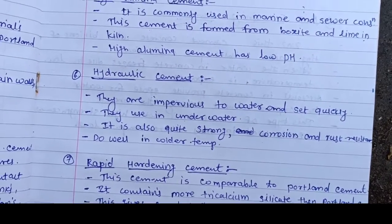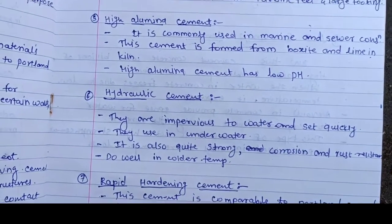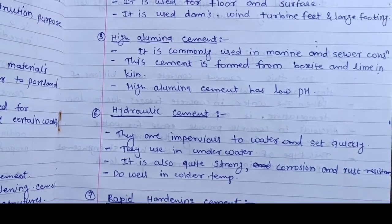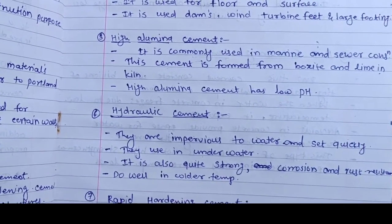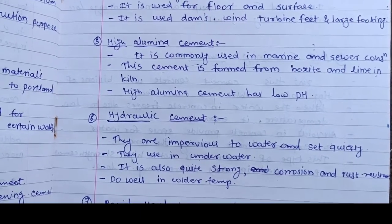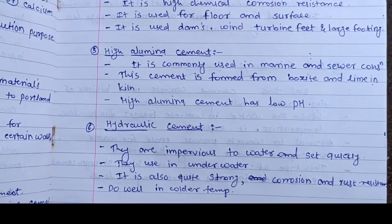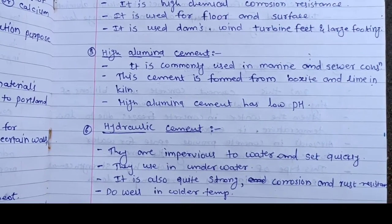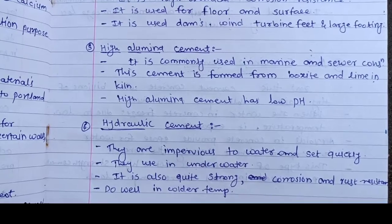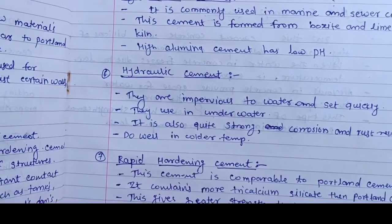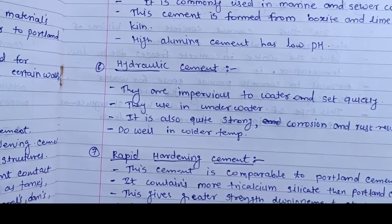The sixth type is hydraulic cement. Hydraulic cement is impervious to water and sets quickly. It is used underwater and is quite strong, with corrosion and rust resistance. It also performs well in cold temperatures.